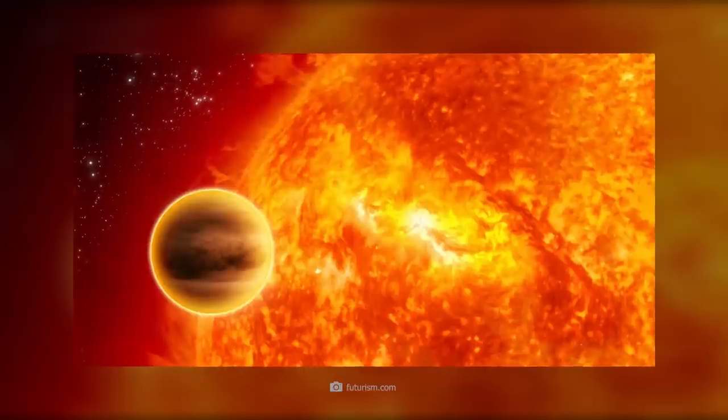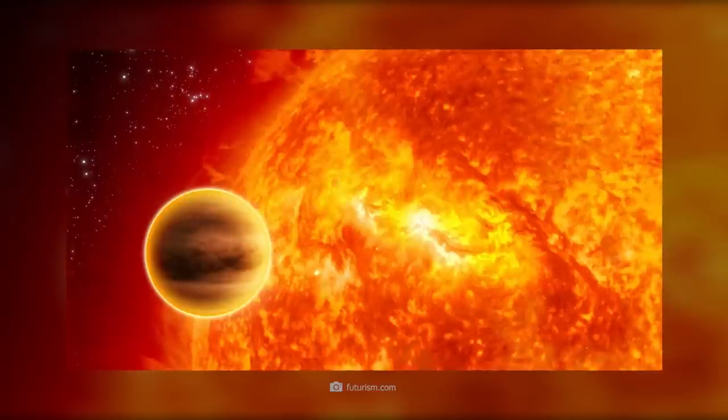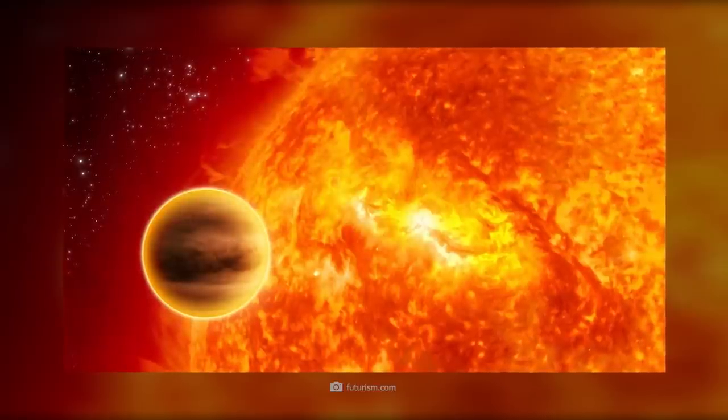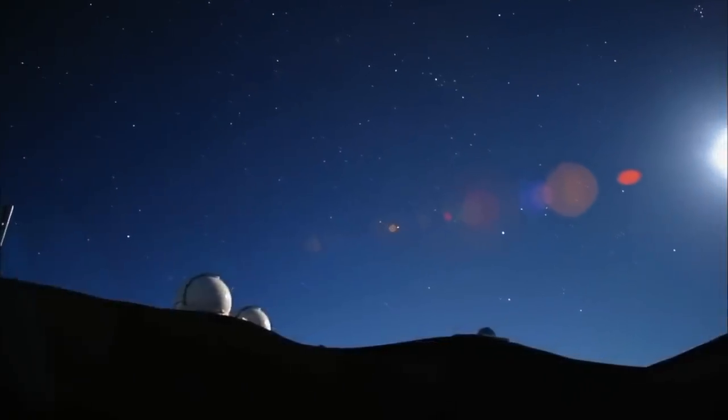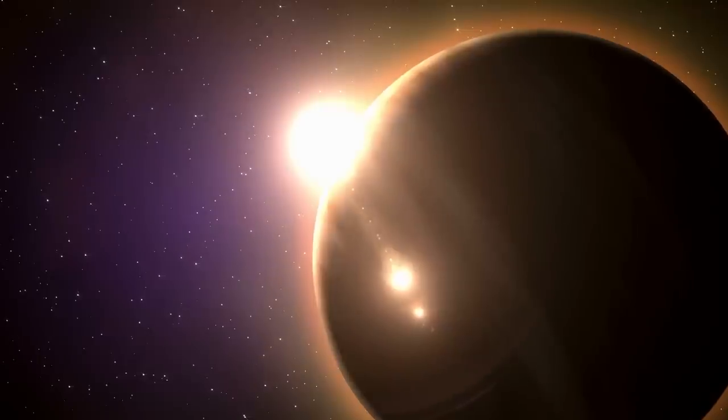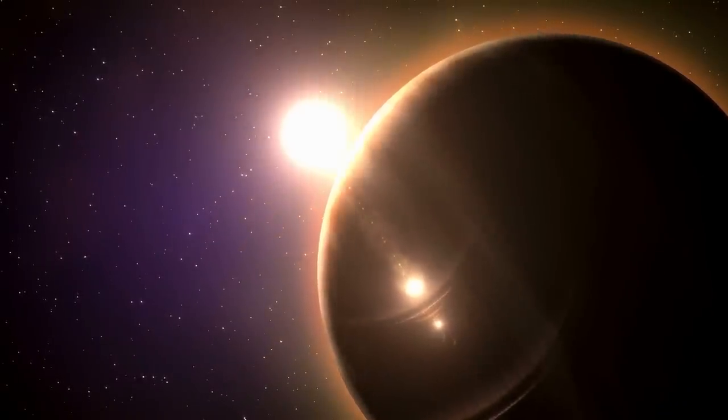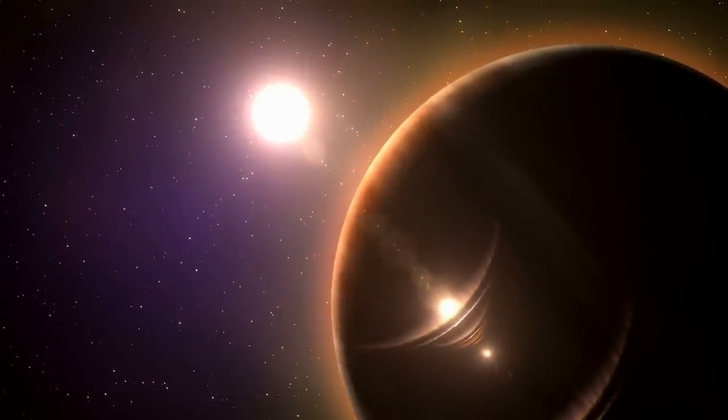For the first time in the history of research, experts had succeeded in observing a planet crashing into its parent star. In the past, the phases before and after such an event could be studied, but never the actual process in which the star engulfs its planetary companion. Against the background of the collected data, the scientists assume that the planet might have weighed between 1 and 10 Jupiter masses.